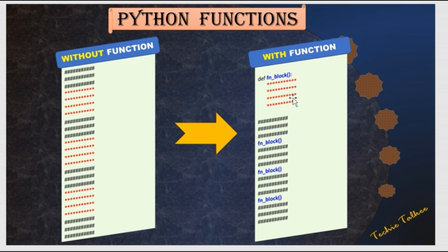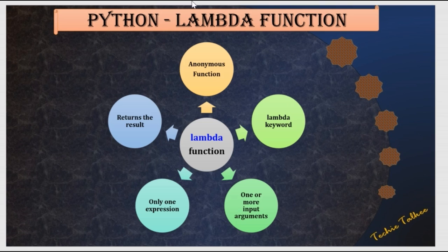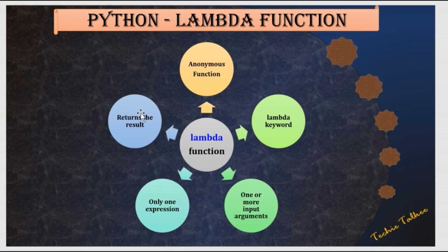Consider the scenario where we have only one expression and the same expression needs to be reused at multiple places. In those cases, I can use the lambda function. The lambda function is an anonymous function, defined using the lambda keyword. It will accept one or more input arguments, but it can have only one expression, and it returns the result.